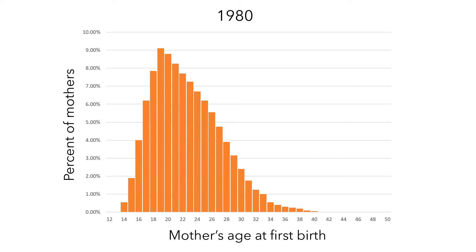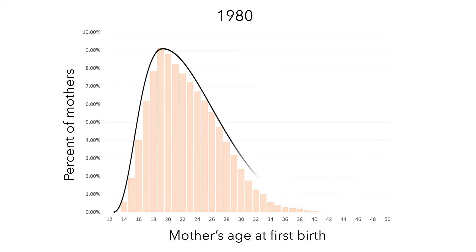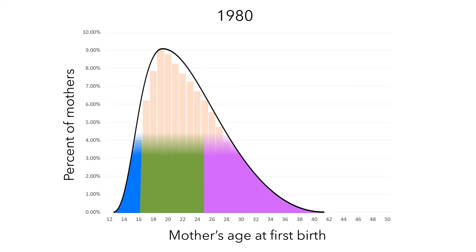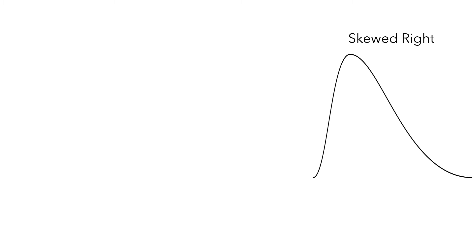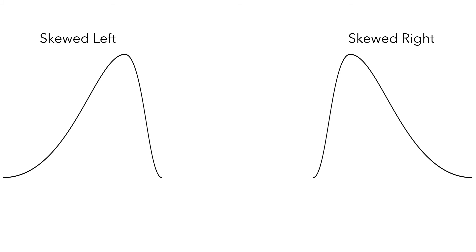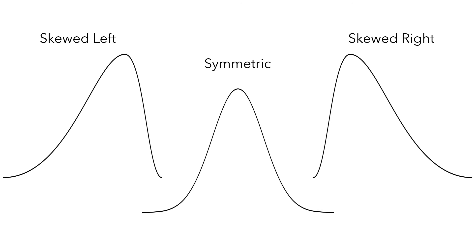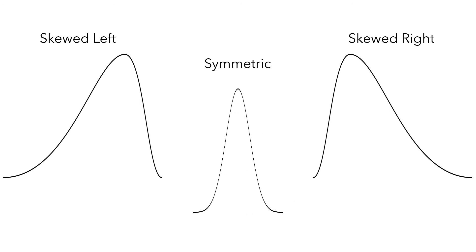The first thing we can describe is the overall shape. We can think about splitting this shape into three sections. The purple section is called the right tail, and we can see that the right tail is much larger than the left tail. This shape is called skewed right because the right tail is larger. Similarly, a distribution where the left tail is larger is called skewed left. And a distribution where the right and left tails look similar is called symmetric, because it looks the same if you were to spin it around its center.